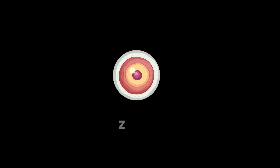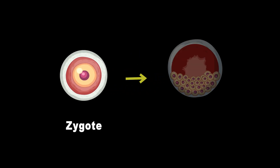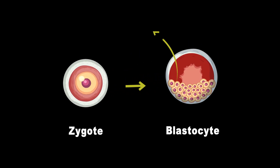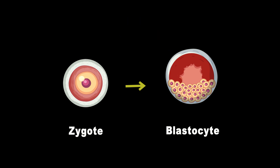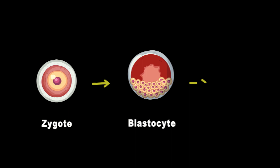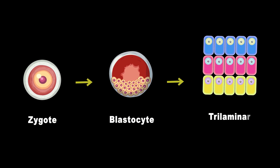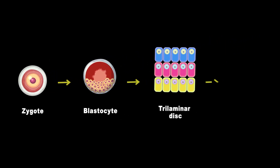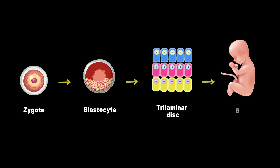We start from a single totipotent zygote. These cells then transition to a blastocyst cell stage, and if we isolate these cells in the lab, we obtain embryonic stem cells. The blastocyst then begins differentiating to form three major layers. These germ layers make different parts of the developing embryo.